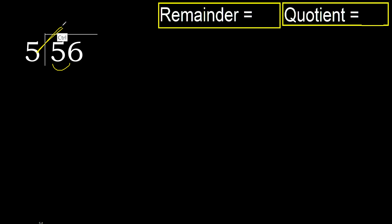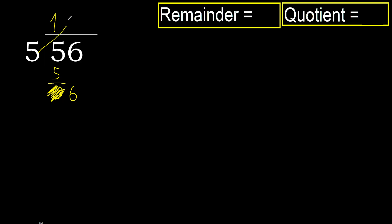5 multiplied by 2 is 10 — 10 is greater. 5 multiplied by 1 is 5, it is not greater. Subtract 0. Eliminate 0 on this side. 5 multiplied by 2 is 10, it is greater. Multiply by 1 is 5.